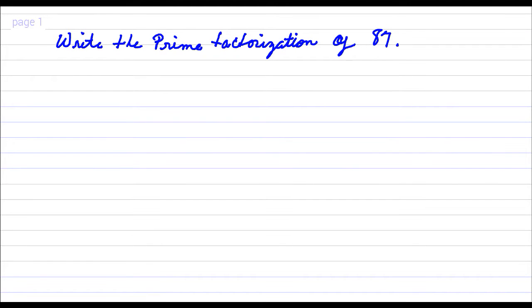To write the prime factorization of 87, the first thing that I notice is 87 is not evenly divisible by the first prime number 2, but it is evenly divisible by the next prime number of 3.